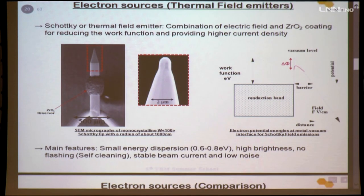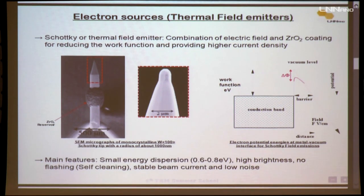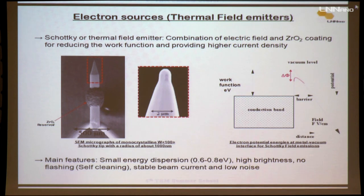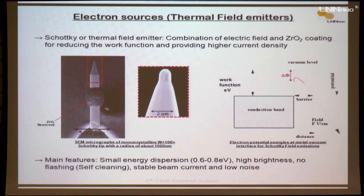The Schottky emitter is a hybrid version of both thermionic and field emission. The tip is very sharp, as in the cold FEG, but the work function is reduced by introducing a zirconium oxide coating. Temperature is also controlled. The main features are a small energy dispersion (though not as low as the cold FEG), high brightness, no need for flashing, and long-term stability.